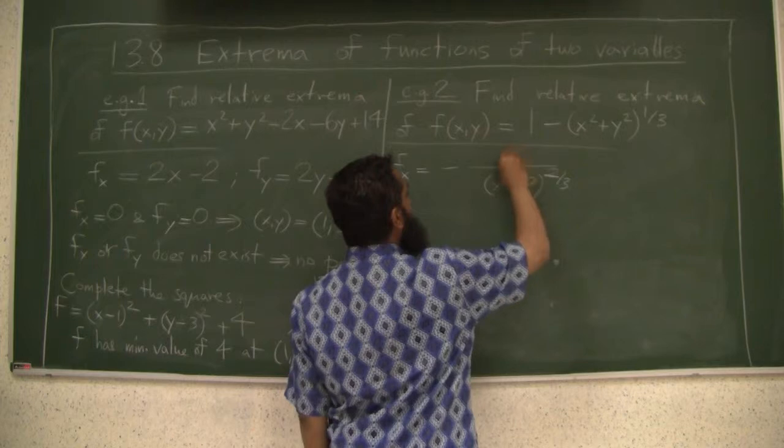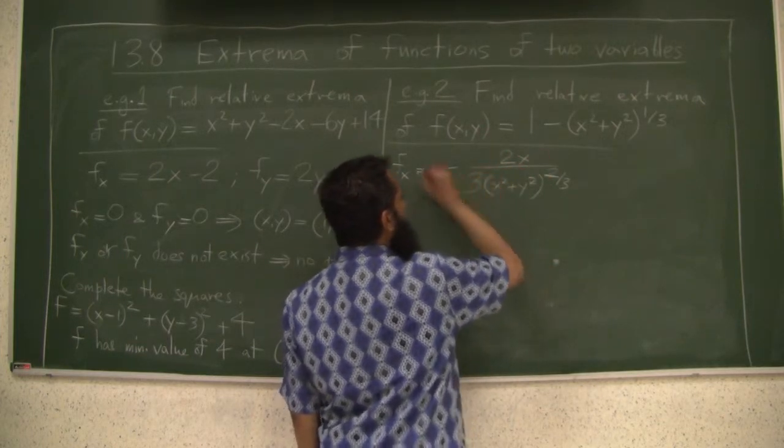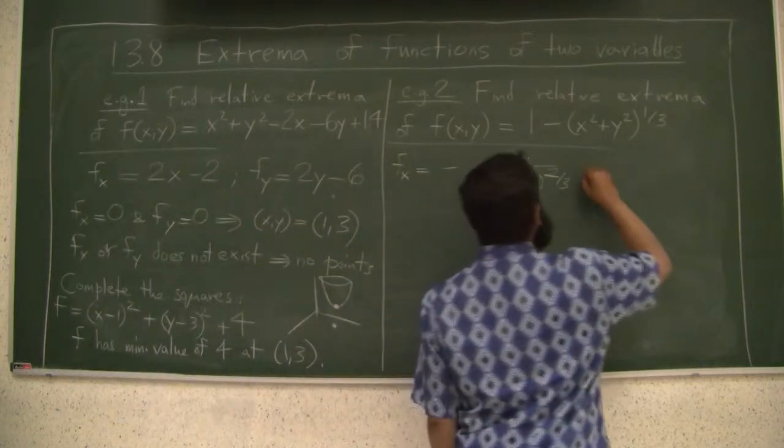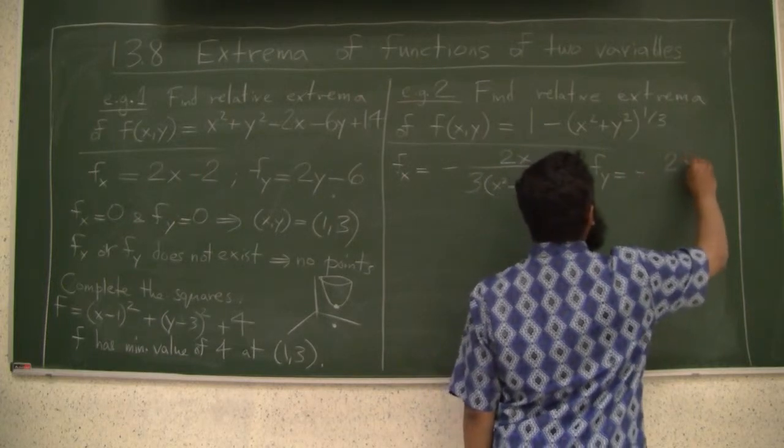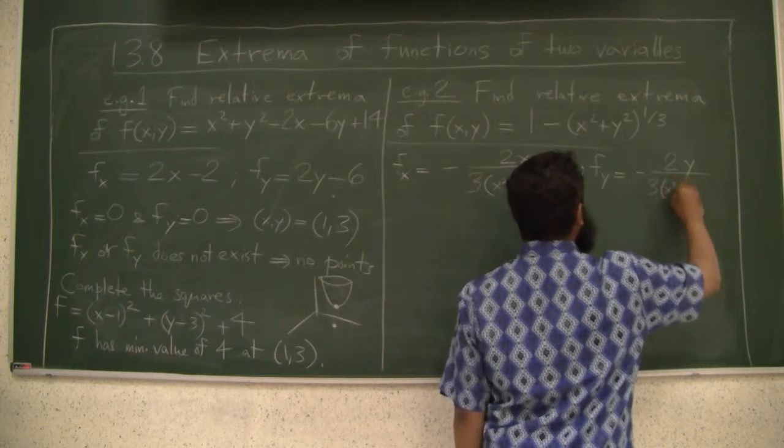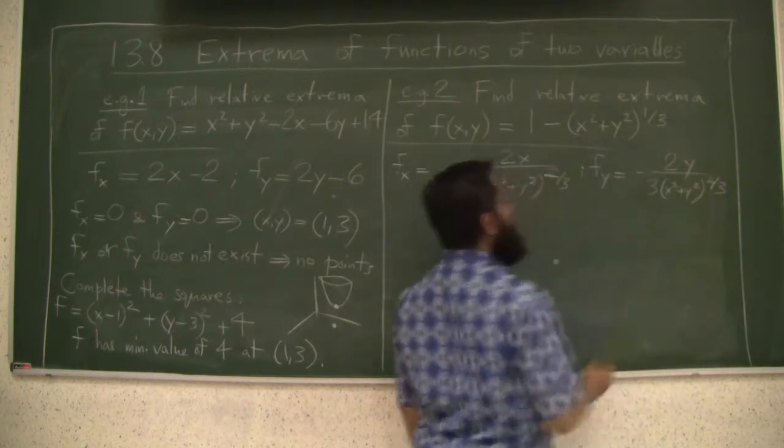You can check that this is the derivative. And similarly, f of y is negative 2y over 3 times x squared plus y squared to the two thirds.